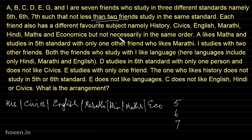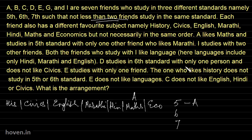A likes Maths and studies in the fifth standard. So our first clue: A likes Maths — this is concretely given — so I will write A here under Maths, and A is studying in the fifth standard. With only one other friend who likes Marathi. So we do not know who that friend is; in the meantime we can simply write Marathi here to indicate that somebody learning Marathi is staying with A.